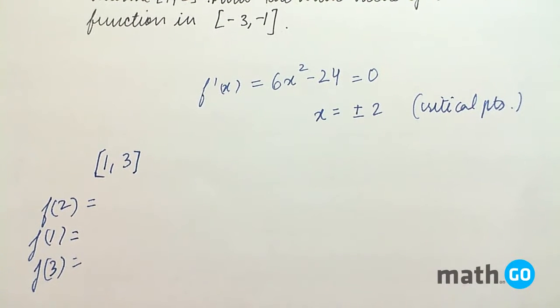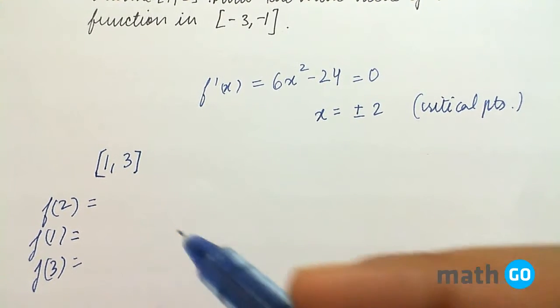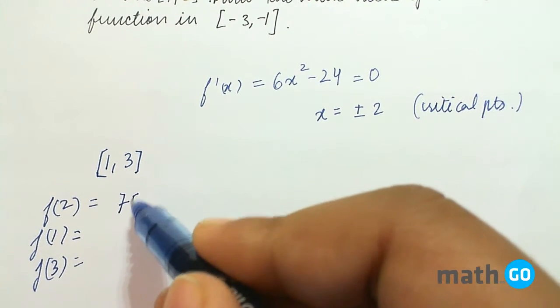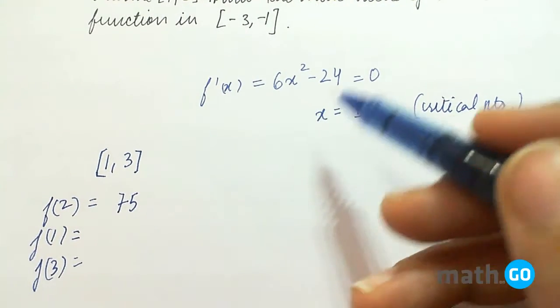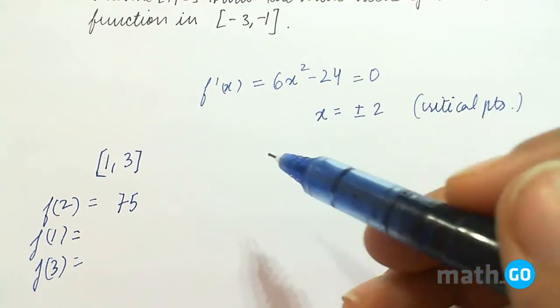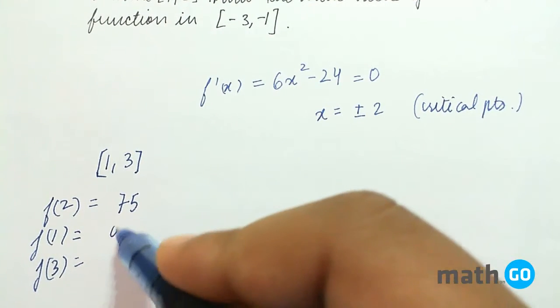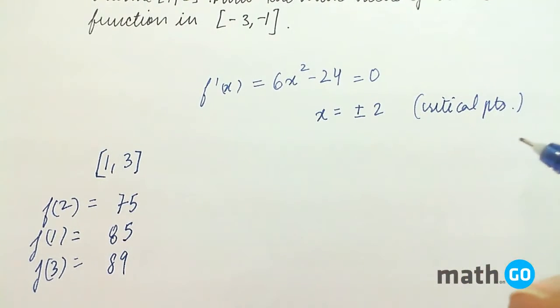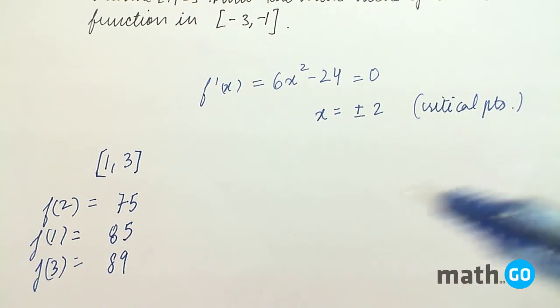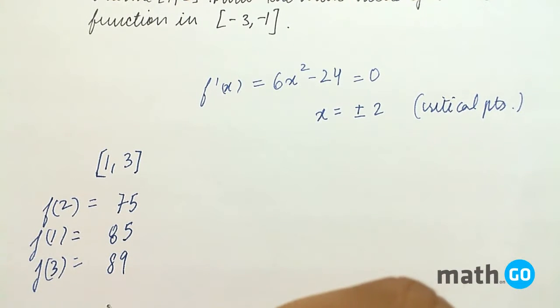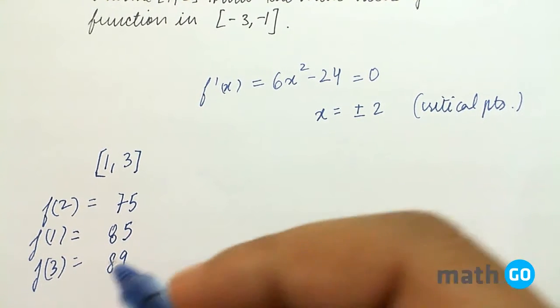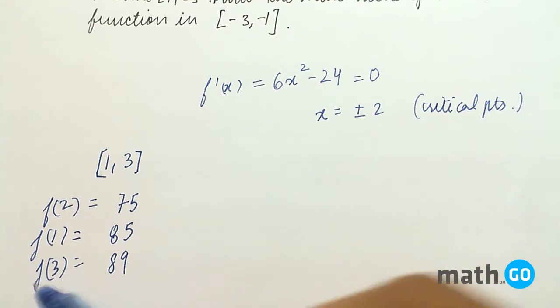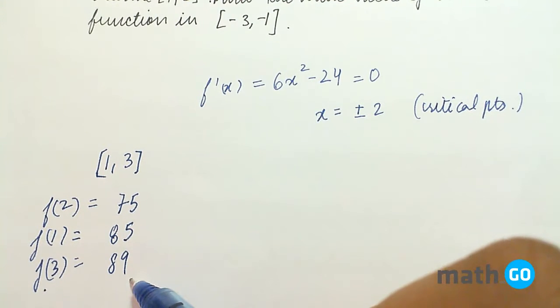So here we get f(2) equals to 75. Simply 2's value, we have to put in that given function of the question. So f(1) will come out to be 85 and f(3) will come out to be 85. So in this interval, we have the maximum value at f(3) and that is equal to 85.